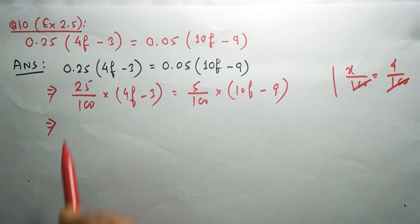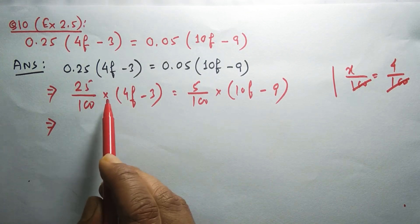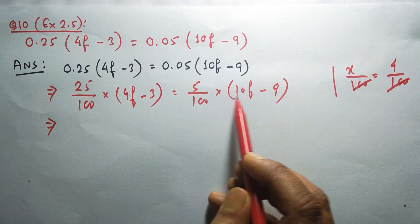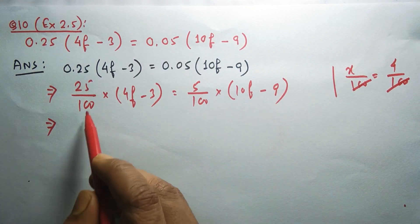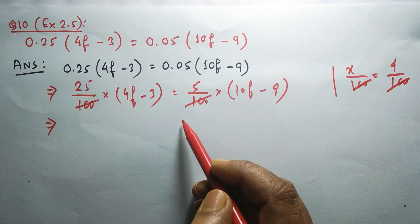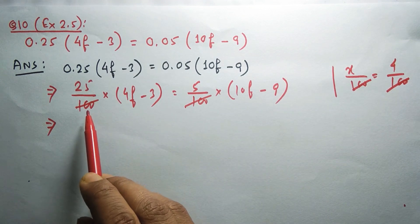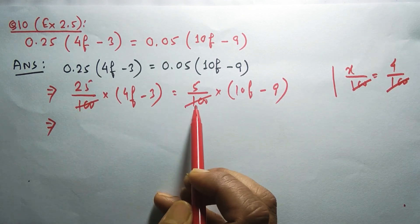Similarly here, 25 by 100 into 4f minus 3 equals 5 by 100 into 10f minus 9. This 100 can be directly cancelled as it is the denominator and the whole term is multiplication.